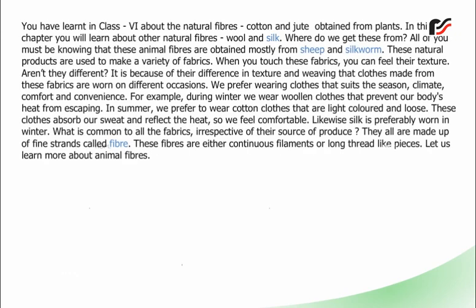You have learnt in class 6 about the natural fibres cotton and jute obtained from plants. In this chapter you will learn about other natural fibres, wool and silk. Where do we get these from? These animal fibres are obtained mostly from sheep and silkworm. These natural products are used to make a variety of fabrics. When you touch these fabrics, you can feel the texture. It is because of the difference in texture and weaving that clothes made from these fabrics are worn on different occasions. We prefer wearing clothes that suit the season, climate, comfort and convenience.